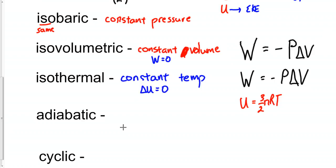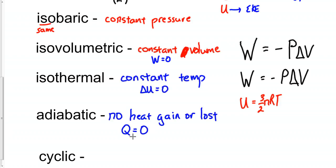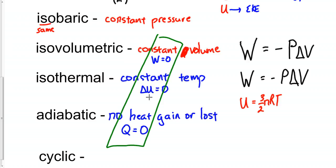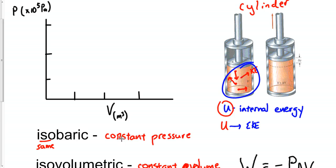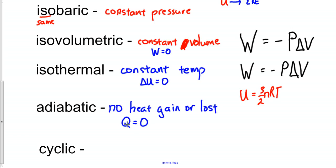The next term is adiabatic, which means no heat gain or loss. Since thermodynamics involves heat from earlier chapters, if you see the word adiabatic, that means Q = 0 in the problem. On a PV diagram, adiabatics have a sharp curve — not a parabolic shape, but a steeper, sharper curve. The key things we're examining in this chapter are work, internal energy, and heat.